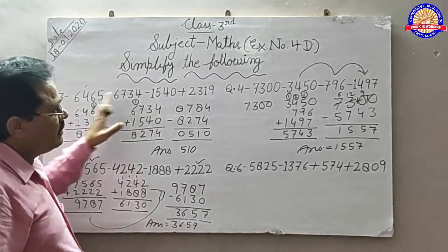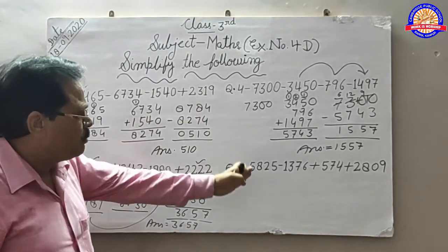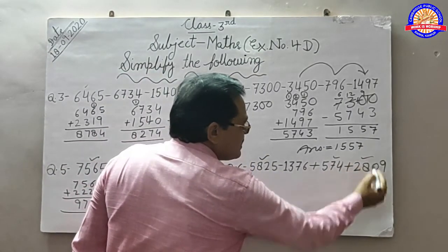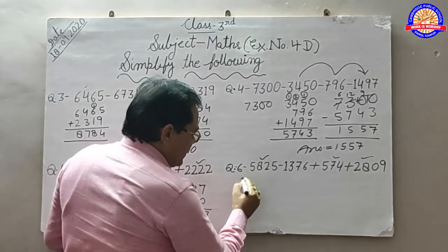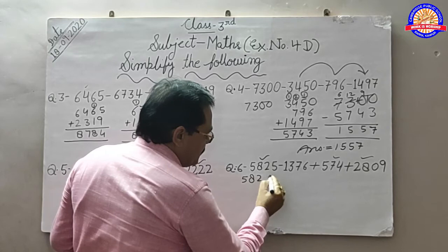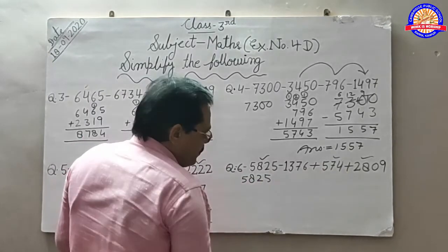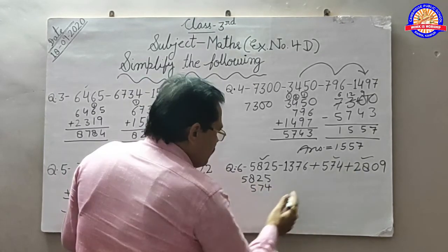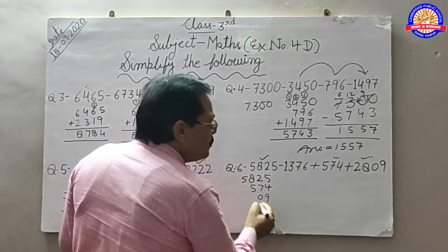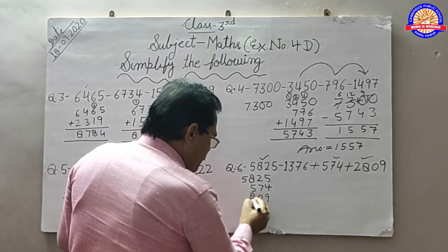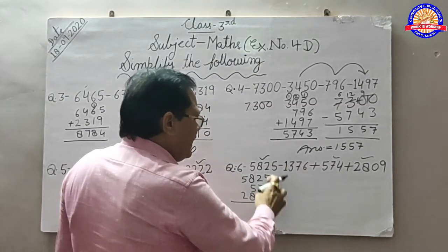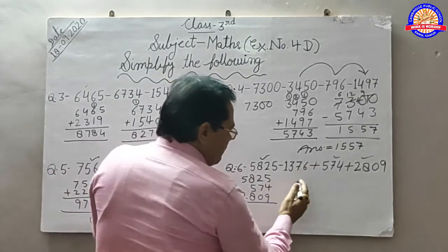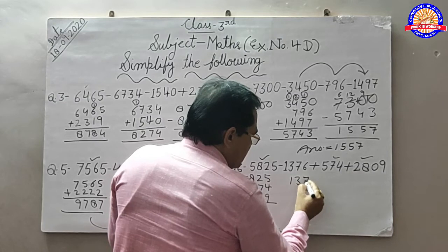जैसे आपने question number 3rd, 4th and 5th किया है. Question number 6th. इसके बाद देखेंगे — plus यहाँ है और plus यहाँ है. इन तीनों को copy करेंगे: 5, 8, 2, 5. इसके बाद इसको copy करेंगे: 4, 7, 5. फिर copy करेंगे इसको: 9, 0, 8, 2. और इस नम्बर को copy करेंगे: 1, 3, 7, 6.